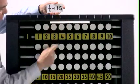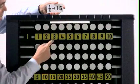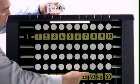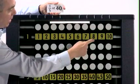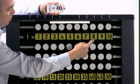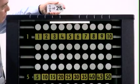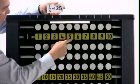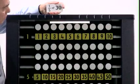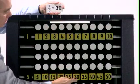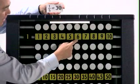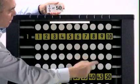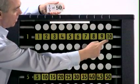One fifth of fifteen is three. One fifth of forty is eight. One fifth of twenty-five is five. One fifth of thirty is six. One fifth of fifty is ten.